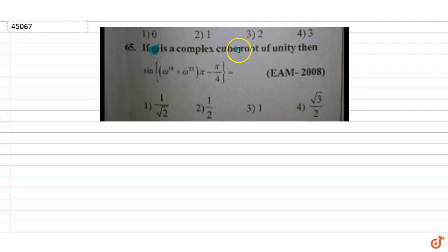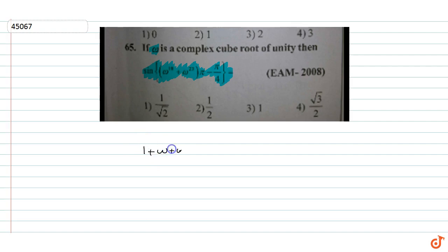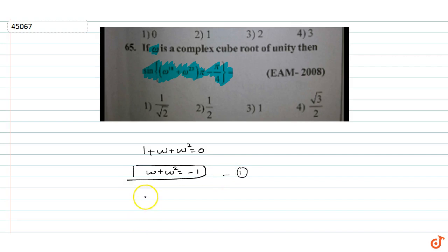The question given is: if omega is a complex cube root of unity, then we have to find the value of sin of (omega to the power 10 plus omega to the power 23) into pi minus pi by 4. Since omega is a complex cube root of unity, 1 plus omega plus omega squared equals 1, which means omega plus omega squared equals minus 1. This is equation number 1. And omega cubed equals 1, which is equation number 2.